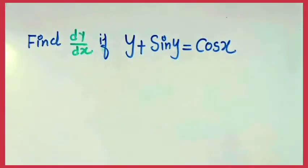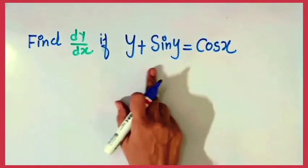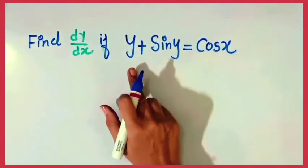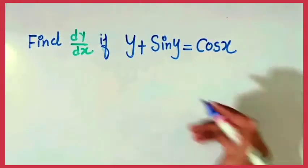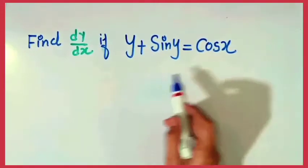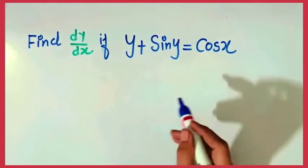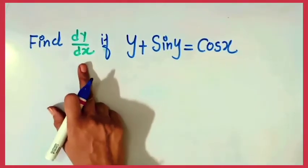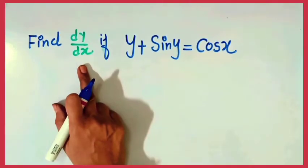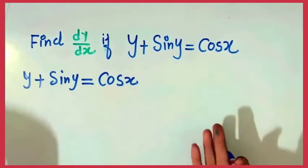We have to learn how to differentiate these implicit functions. Let us get started with the first example. The question is: find dy/dx if y plus sin y equals cos x. This is an implicit function because x and y are expressed by a relation, but neither x nor y is explicitly given.